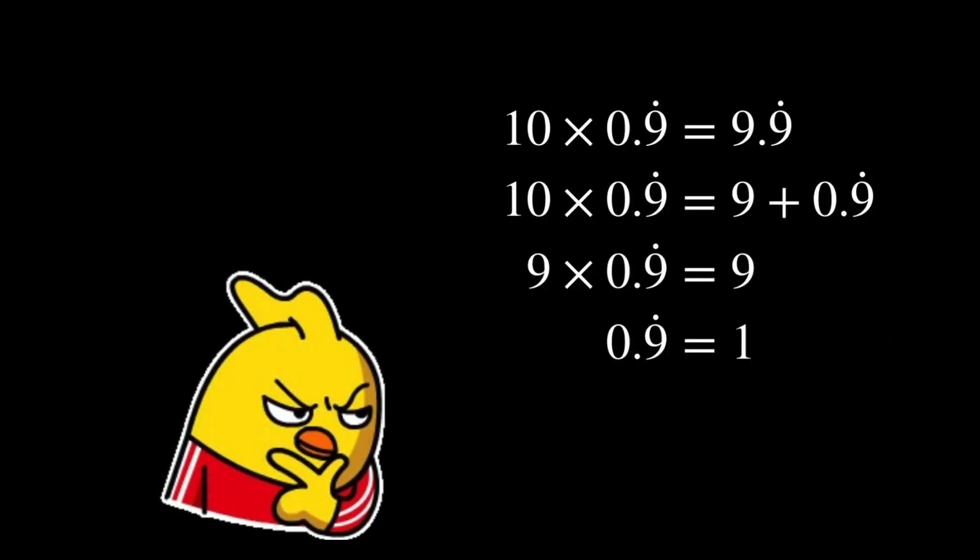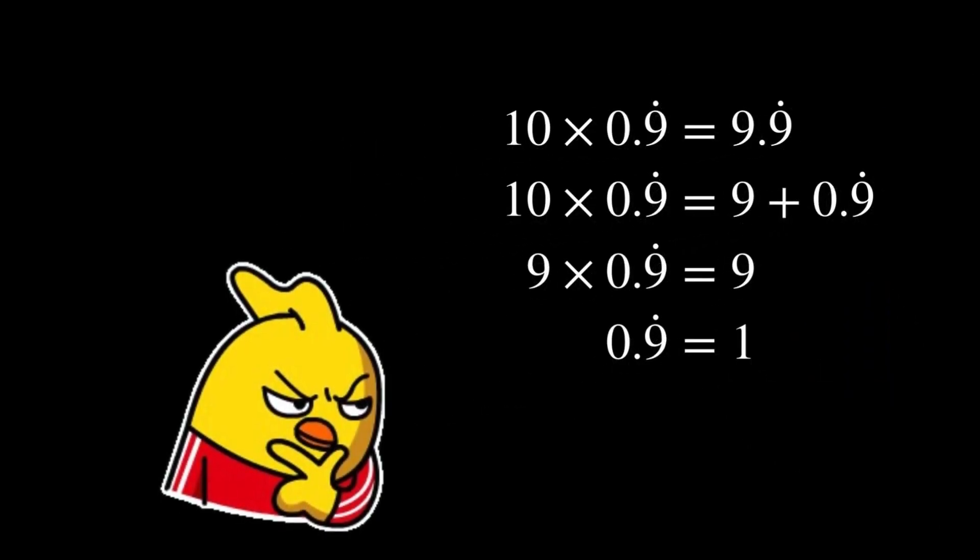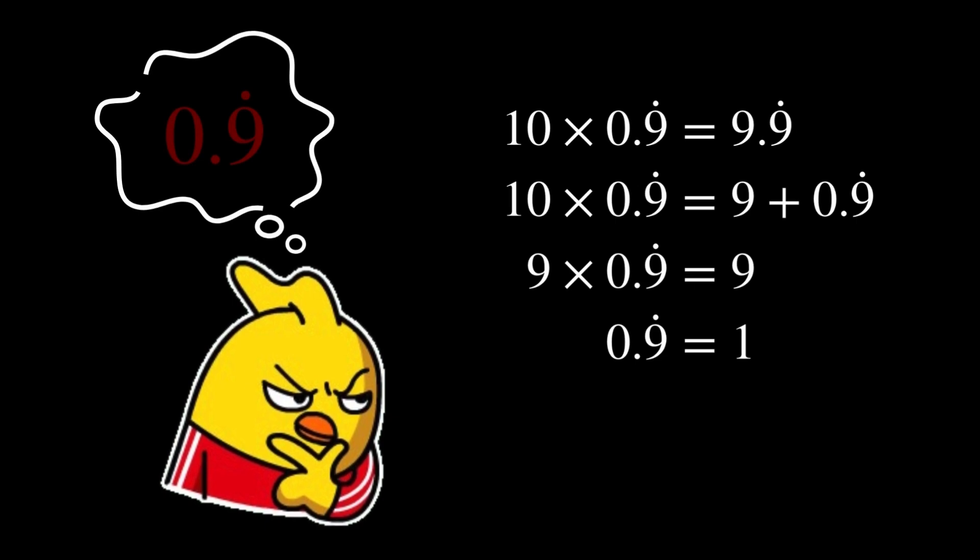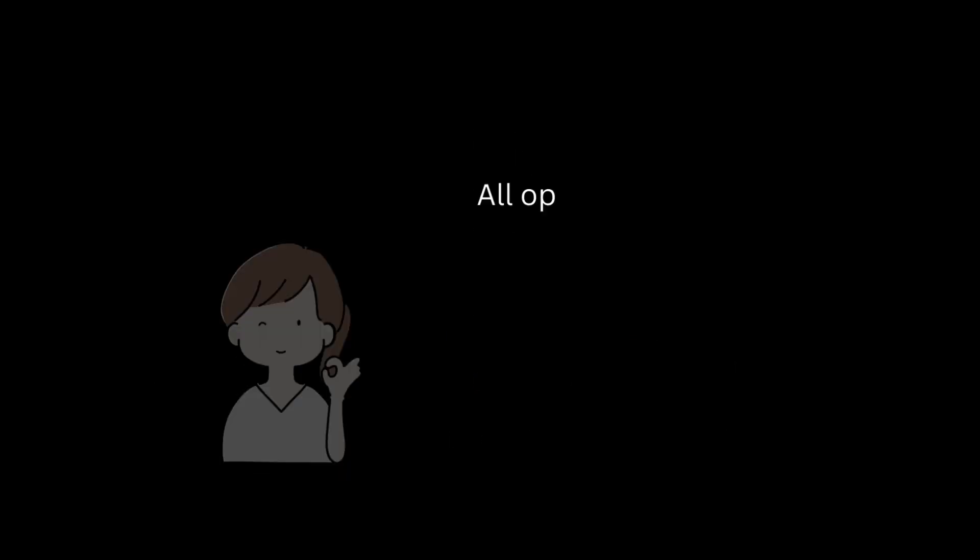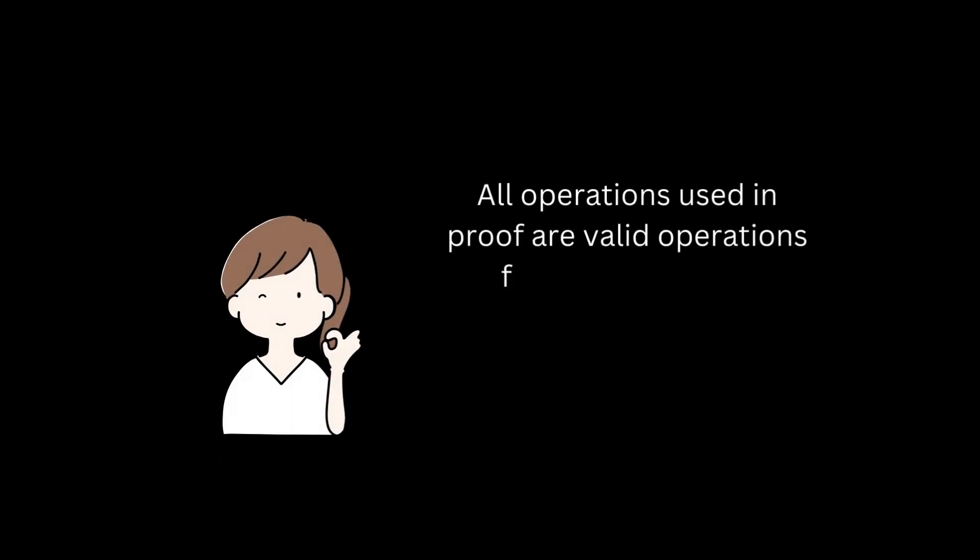Skeptics might question the validity of these operations, especially when this seemingly special number like 0.9 repeating is involved. They may ask why you can subtract and divide both sides by the same number and still preserve equality. The quick answer: we treat 0.9 repeating here as a real number, just like any other real numbers such as 0, pi, or minus 2.4. Therefore, any operation valid for real numbers applies here.